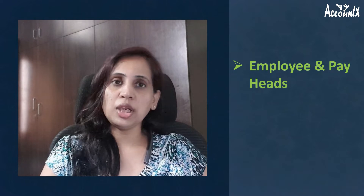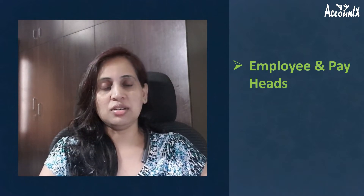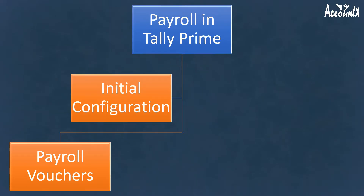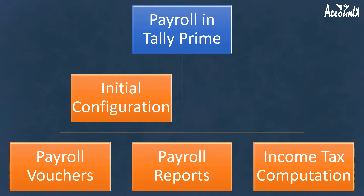I initially thought of making a single video, but it was going to be lengthy, so I decided to make a two-part series. The first part is on initial configuration, where we will learn creation of employees and pay heads like basic salary, HRA, etc. We will also understand how to define income tax declarations received from employees about their 80C investment, house rent, other deductions, etc. In the next and last part, we will learn automatic payroll processing — creation of payroll vouchers — and view payroll reports including the income tax computation statement. So let's start our journey with the initial configuration.